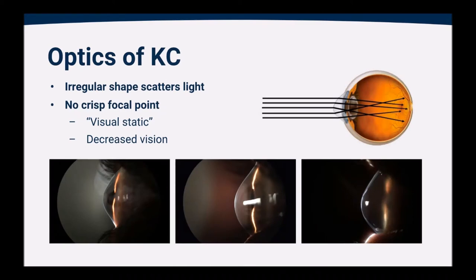In keratoconus, that shape is no longer regular and smooth, but rather is irregular and bulging or protruding, and this irregular shape causes scattering of light. You can see in that diagram that the light rays bend in different directions, creating multiple focal points on the retina, which creates visual static, decreases the vision, and causes severe distortion to the vision as the disease gets worse.